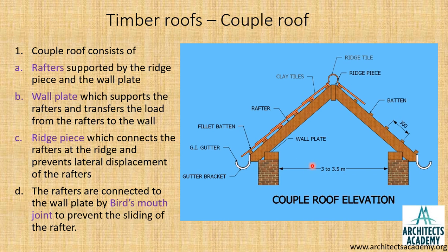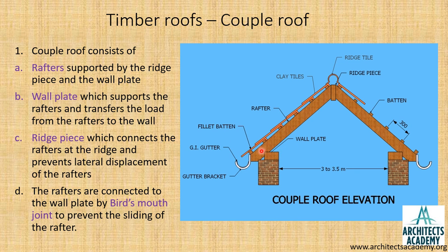Looking at the sketch, the inclined members are called the rafters. The rafters are fixed at the top to the ridge piece. At the bottom they are connected to the wall plate, which is a timber member that runs along the entire length of the wall. There is one wall plate on each side. The rafters are connected to the wall plate using a bird's mouth joint, which prevents the rafter from sliding down.